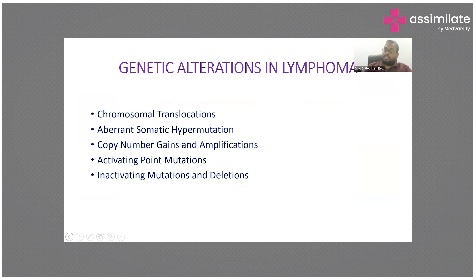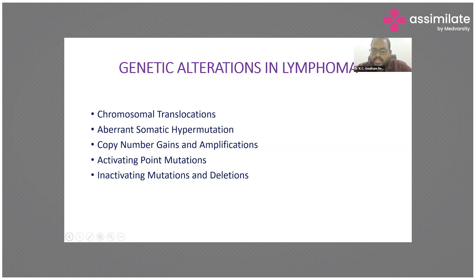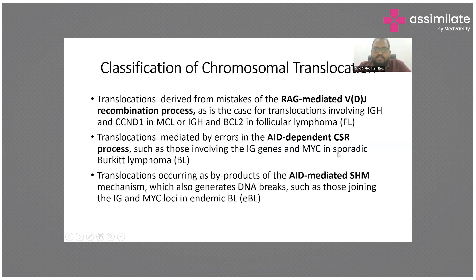The most important new prognostic factors for lymphoma are genetic alterations. These include chromosomal translocations, aberrant somatic hypermutations, copy number gains and amplifications, activating point mutations, and inactivating mutations. The most common genetic change seen in lymphomas is chromosomal translocation. It happens because there are inherent gene rearrangements occurring, particularly through RAG-mediated VDJ recombination, AID-mediated class switching, and somatic hypermutation — three key processes at which chromosomal translocations can occur.